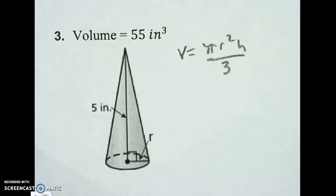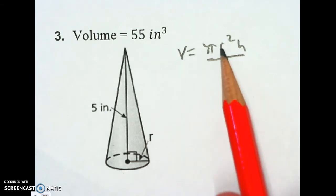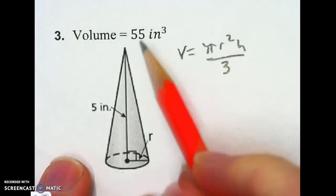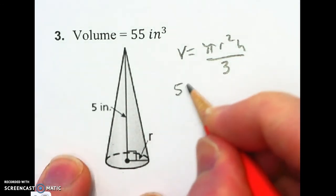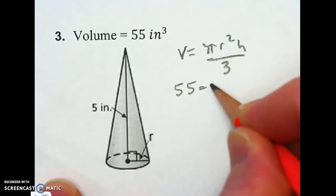I'm going to plug in the pieces that it has given me. There's three spots I could plug in. I could plug in at the volume spot, the radius spot, and the height spot. So let's just plug in what we've got. It gave us a volume of 55. It gave us a height, but we don't have the radius.